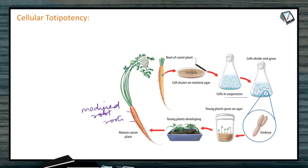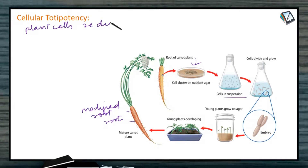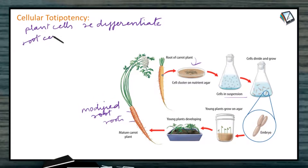So everything happened because of the root of the plant. From the root tissue, we are able to get the whole carrot plant. Now, unlike animal cells, plant cells re-differentiate. Plant cells have the ability to re-differentiate. Differentiated means the cell has already been modified to perform a specialized function. Here the root cell of the carrot is a differentiated cell — it has already been modified to do the function of the root.